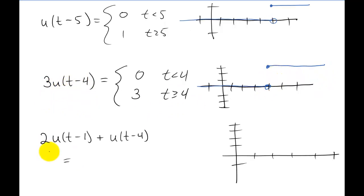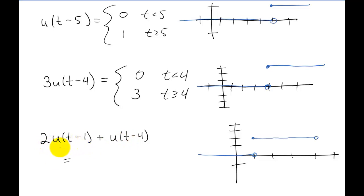Now we're summing two different step functions. As long as t is less than one, both arguments inside the two step functions are negative, so both functions are zero. If t is between one and four, the argument of the first step function becomes positive while the second is still negative — giving two times one plus zero, which equals two. As soon as t becomes bigger than four, both step functions become one, leaving us with two times one plus one, which gives three.